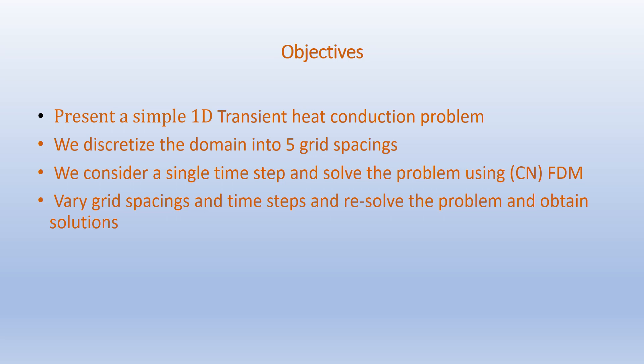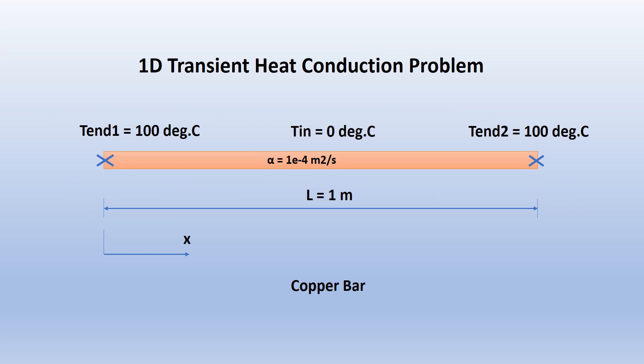We have a 1-meter-long copper bar. The initial temperature of the bar is 0 degrees Celsius when time t equals 0. The two ends of the bar are maintained at 100 degrees Celsius. The thermal diffusivity, which is a property of the material, is given as alpha equals 1×10⁻⁴ meter squared per second.